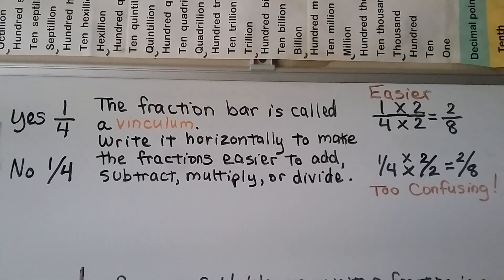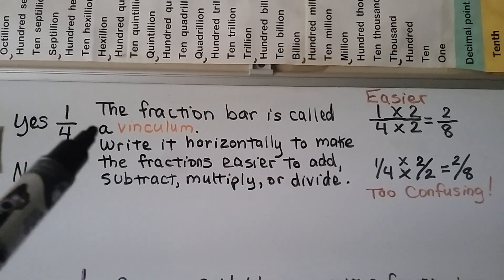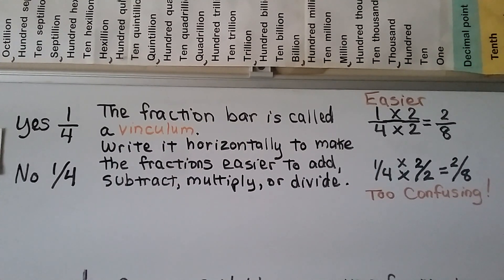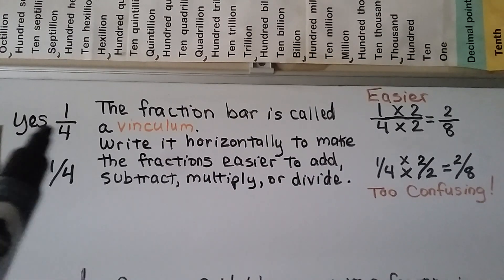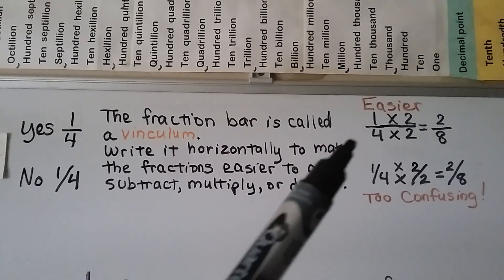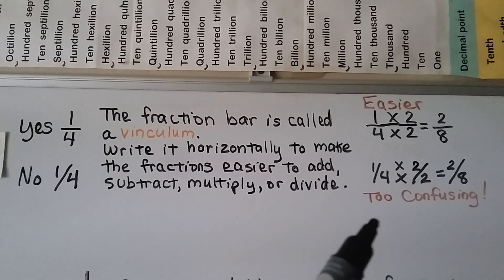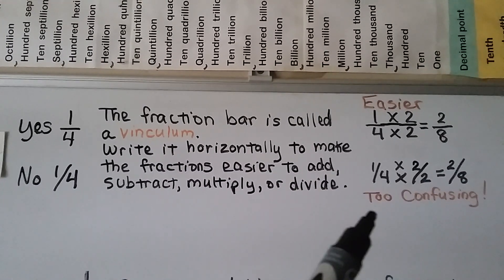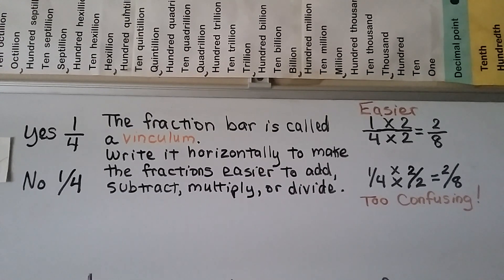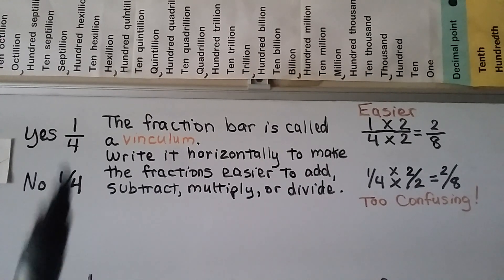The fraction bar is also referred to as a vinculum. We need to write it horizontally to make fractions easier to add, subtract, multiply, or divide. If you try to write it on a slant, it's going to get too confusing when you need to perform operations. Try to write it with a horizontal bar — it'll help you all the way through high school and algebra.